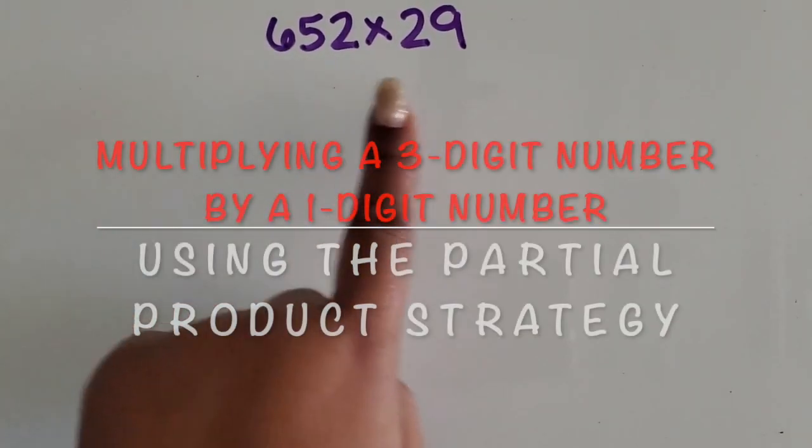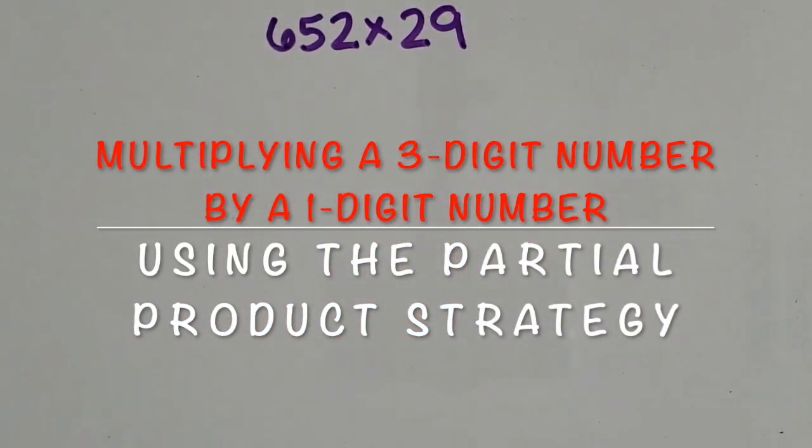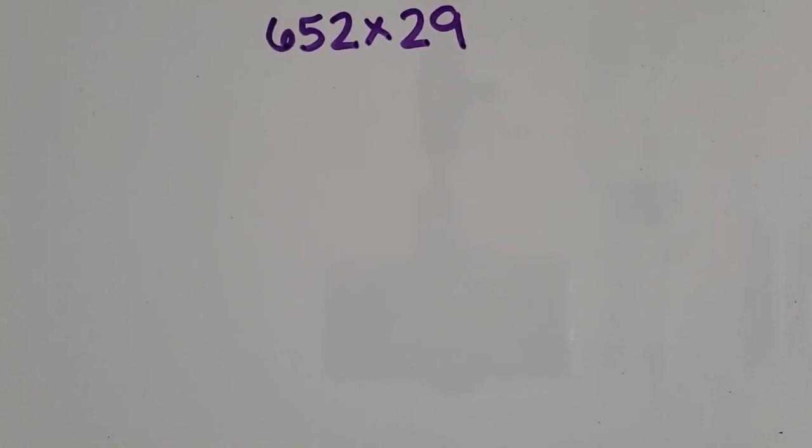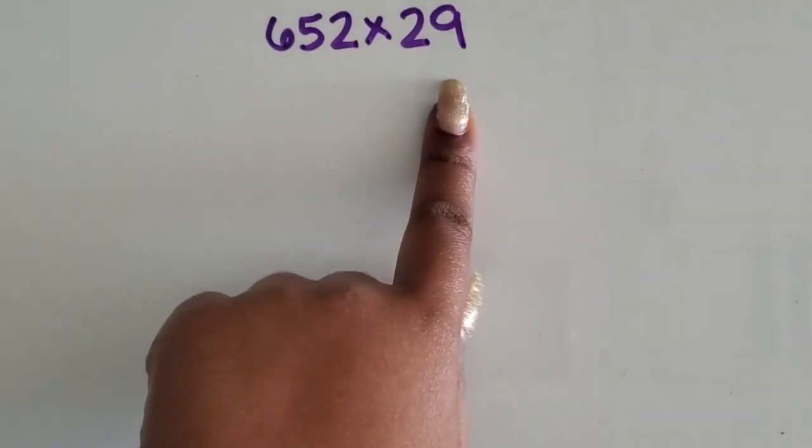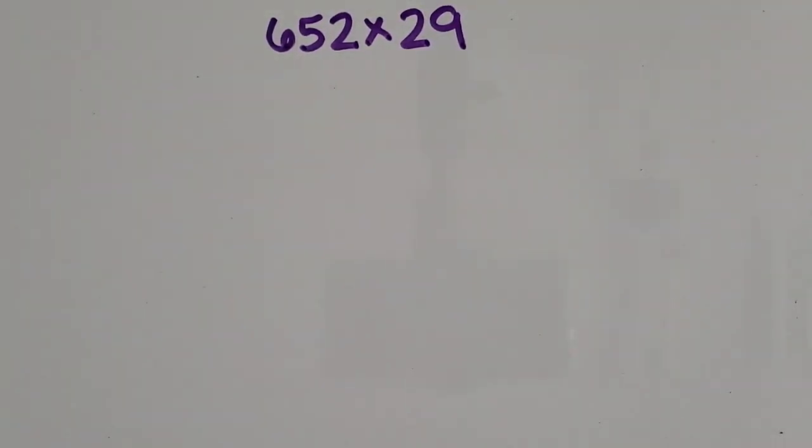We're going to multiply a 3-digit number by a 2-digit number using the partial product. Here's a caution: once students are solving problems where both factors are multi-digit numbers, they're usually ready for the standard or traditional algorithm because it's a more efficient strategy.